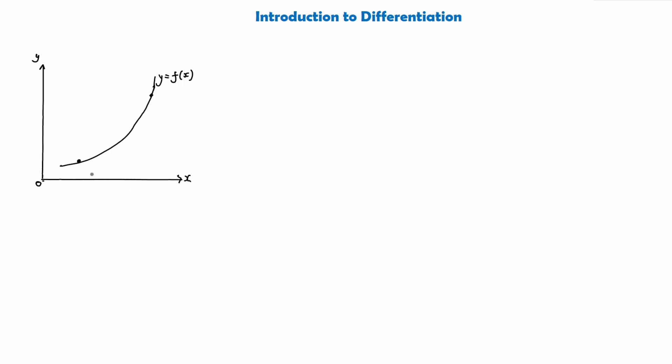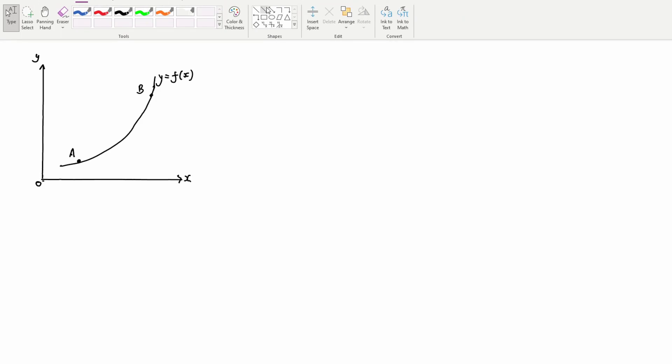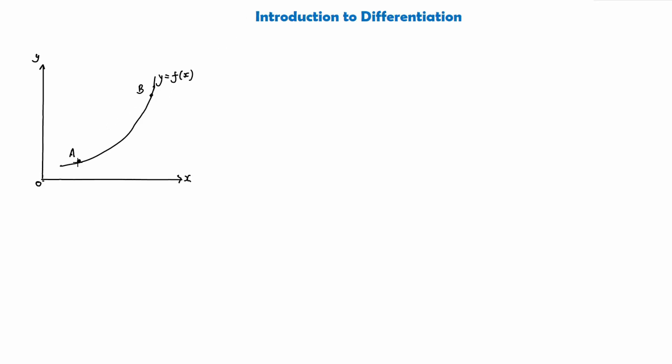So in order to work out the gradient of the curve, let's take these two points and we'll label them A and B. The best way to find out the gradient of a curve is to approximate, and as you can see, if I take a straight line here and join these two dots together